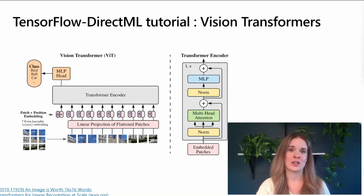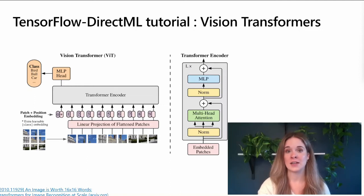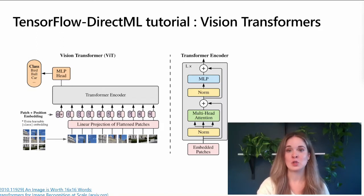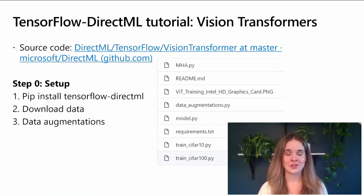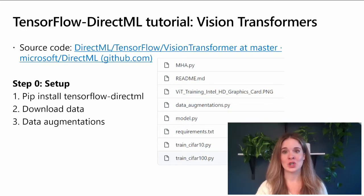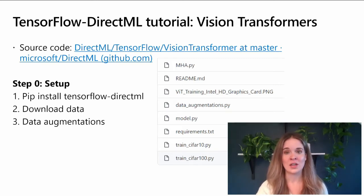The goal of a Vision Transformer is to split an image into equal-size patches — like you see on the diagram with the images of the building — and feed these in as a sequence to learn and capture relationships between the patches for more performant image recognition. You can find the source code for this tutorial on the DirectML GitHub repository, in the TensorFlow folder. I'll walk through the key components of constructing and training the model and then we'll have a video demo at the end.